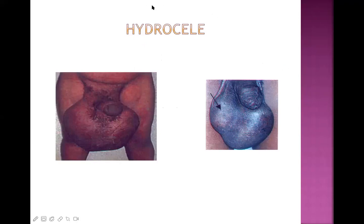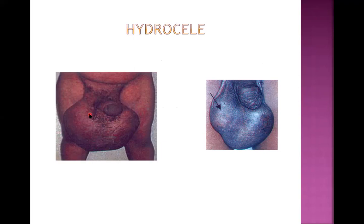Looking at clinical pictures: this image shows a huge hydrocele caused by filariasis. In the early stage it is reversible, but in the late chronic stage the thickening becomes irreversible and plastic surgery may be needed. To differentiate hydrocele from hernia: in hernia, something comes from above and bulges when the patient coughs; in hydrocele, there is no such response.